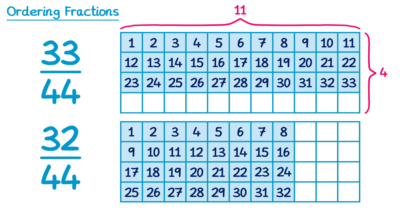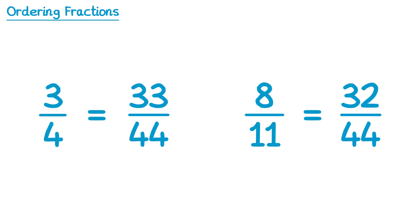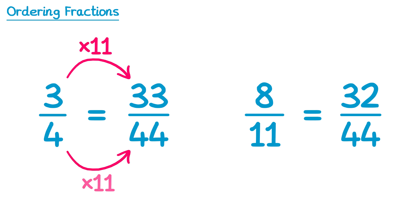Now you can actually do this process without drawing the diagrams at all. Comparing 3 quarters and 8 elevenths: notice how we multiply the numerator by 11 and also the denominator by 11 to get 33 over 44. For the 8 elevenths, we're multiplying the numerator by 4 and the denominator by 4 to get 32 over 44. So instead of comparing 3 quarters and 8 elevenths, it's easier to compare 33 forty-fourths and 32 forty-fourths.